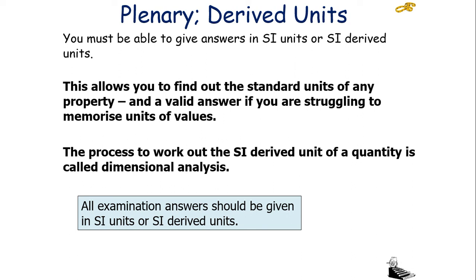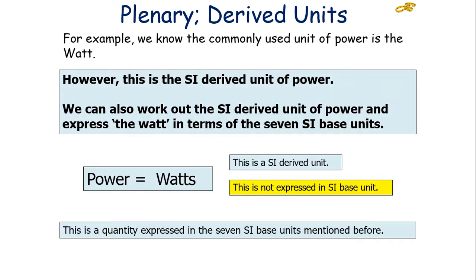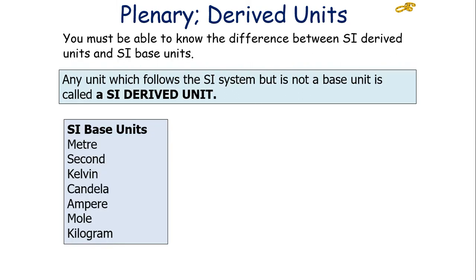You've got to also be able to find out the standard units of any property and the valid answer if you're struggling to memorize the units of values. Again, in this process, to work out the SI-derived unit of a quantity is called dimensional analysis, and all examination answers should be given in SI-base units or SI-derived units. For example, we know the commonly used unit of power is the watt, but this is the SI-derived unit because it's not one of the base units. So we can express the unit of power in the SI-base units. Remember, any unit which follows the SI system but is not a base unit is called an SI-derived unit.